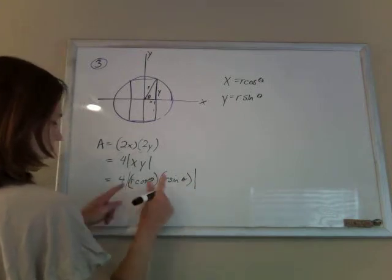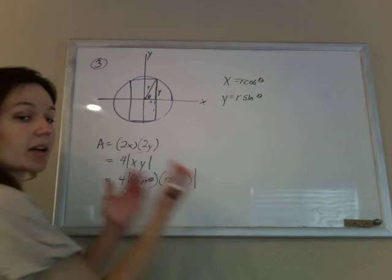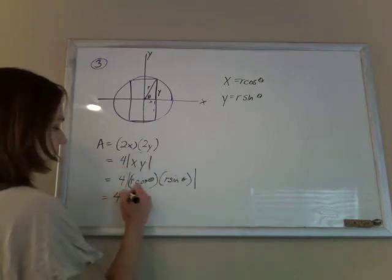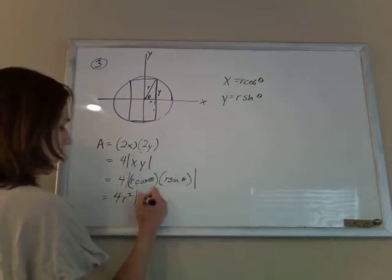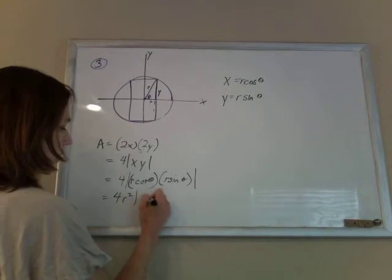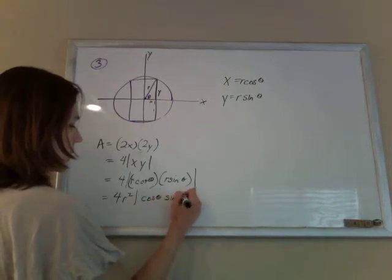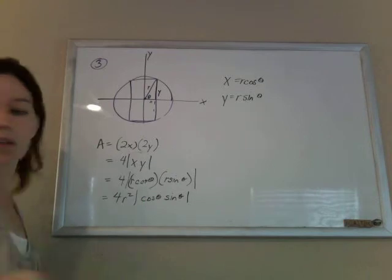And so we're getting 4 r times r is r squared. That can go ahead and come out of the absolute value, because it's always going to be positive anyway. It doesn't need it. And r squared cos theta times sin theta, and that's the area all in terms of theta.